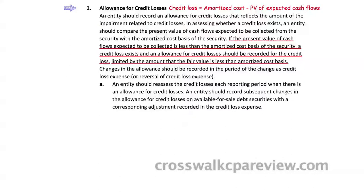You record impairment related to credit losses through an allowance for credit losses, and impairment that is not related to credit factors should be recorded through other comprehensive income.